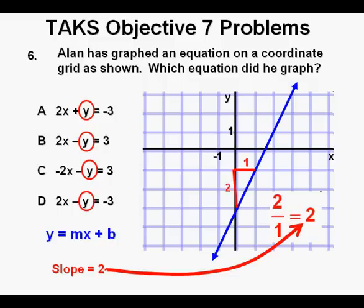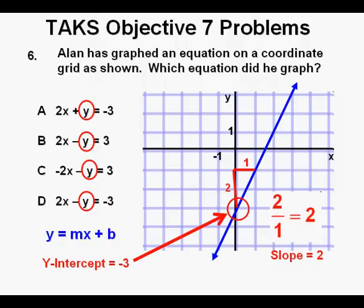We're looking for an equation with a slope or rise over run of 2 over 1, which equals 2, and we're looking for a y-intercept of negative 3.